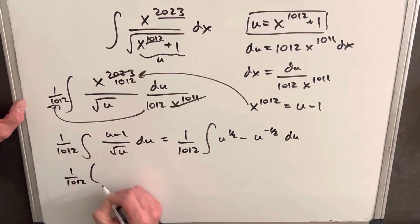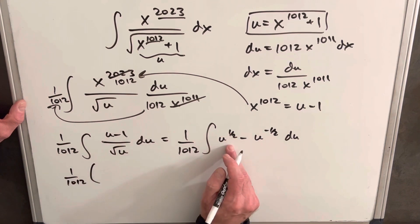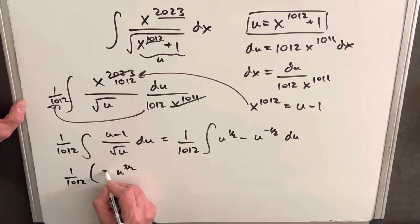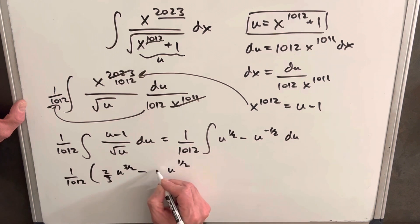So we're going to have 1012, integral of this u^(1/2) is going to be u^(3/2), two-thirds in front, minus integral of this is going to be u^(1/2), bring the two in front.